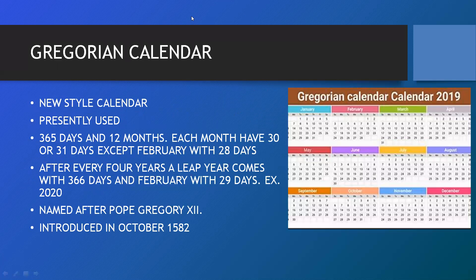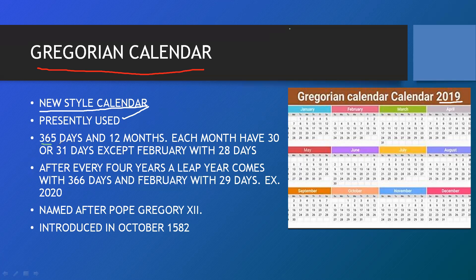First we will read about the Gregorian calendar. The Gregorian calendar is the normal calendar that we use every day. It contains 12 months — the same calendar we use nowadays — so it is called the new style calendar and it is presently used. It has 365 days and 12 months.